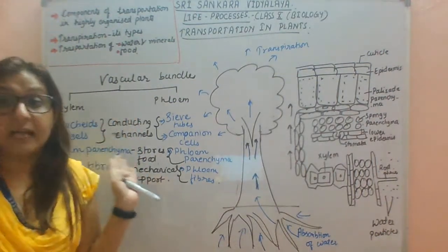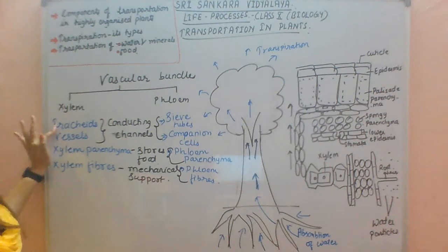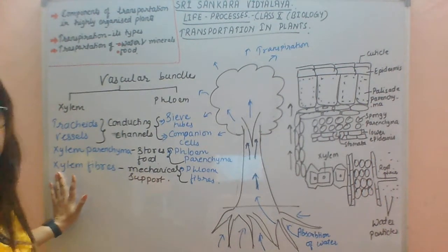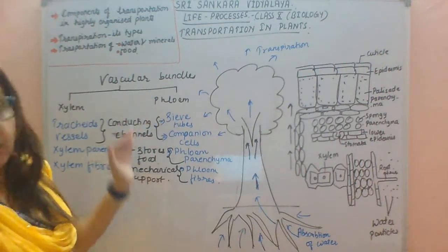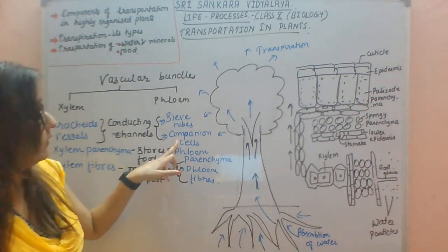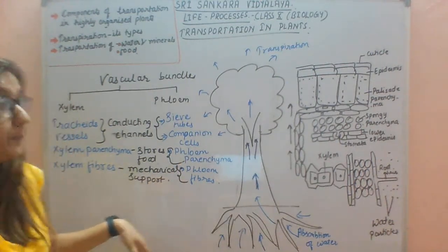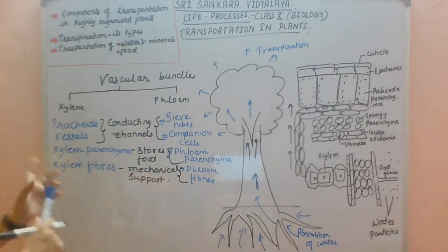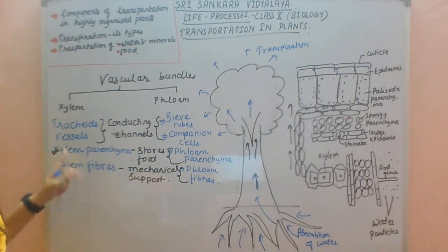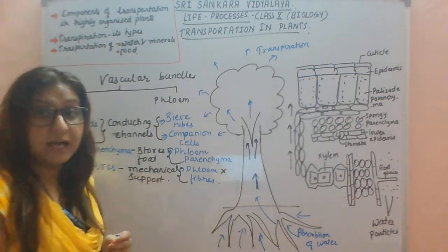These are the components of xylem and phloem. One important point: tracheids and vessels are dead cells. Xylem parenchyma is the only living component of xylem, and xylem fibres are also dead. In phloem, sieve tubes, companion cells, and phloem parenchyma are all living cells. Only phloem fibres are dead. So in xylem, only one component is living — xylem parenchyma — and three are dead. In phloem, only one is dead — phloem fibres — and three are living.